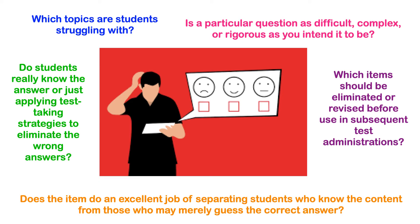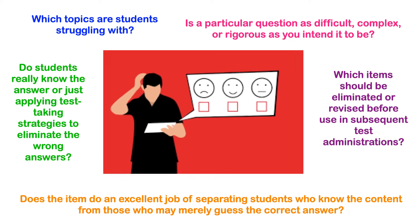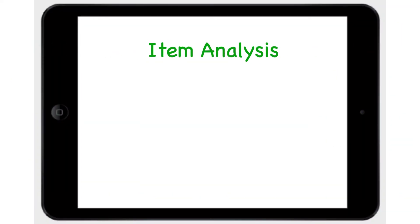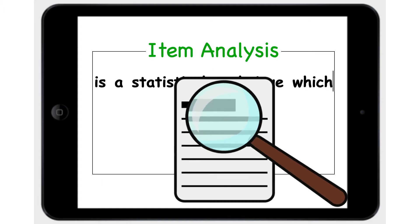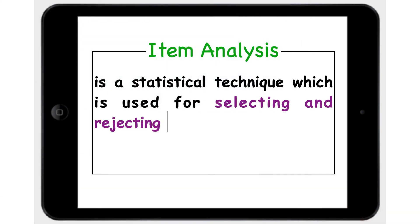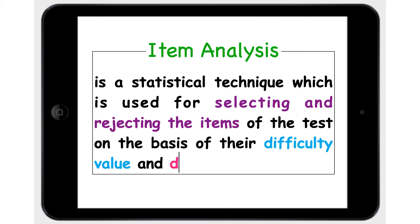One way to increase visibility into student learning gaps is via item analysis. Item analysis is a statistical technique used for selecting and rejecting the items of the test based on their difficulty value and discriminating power. Item analysis provides evidence that a test measures what it is supposed to measure and produces consistent results. Reviewing item quality helps ensure that educators obtain the best possible information to make instructional decisions.